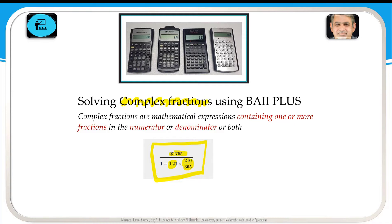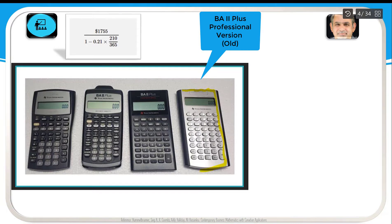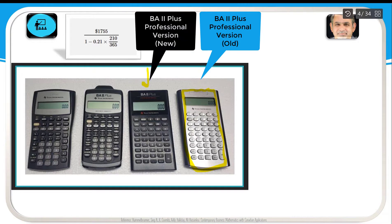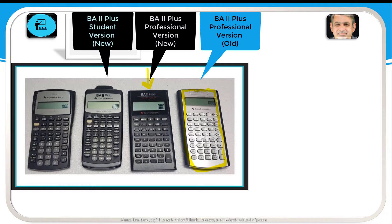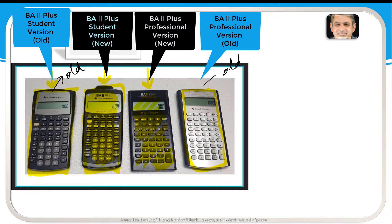We will use the BA II Plus calculator to solve this. The BA II Plus calculator comes in many versions: there is the old version of the BA II Plus Professional, the new version of the BA II Plus Professional, the new version of the BA II Plus student calculator, and the older version of the BA II Plus student calculator. In the market you may find one of these.